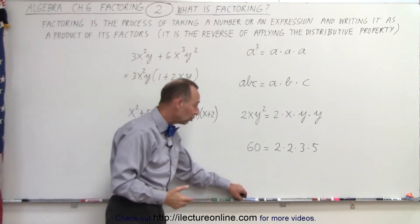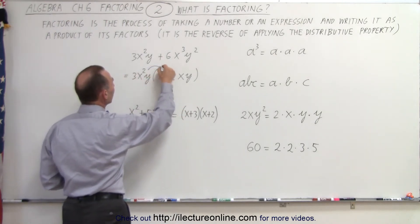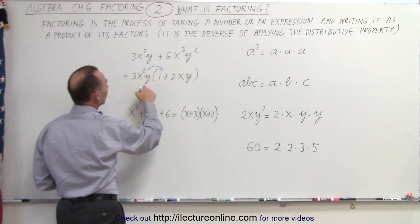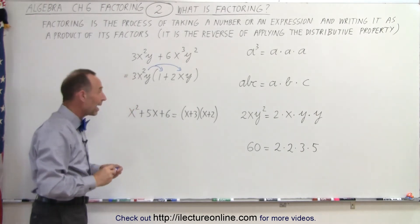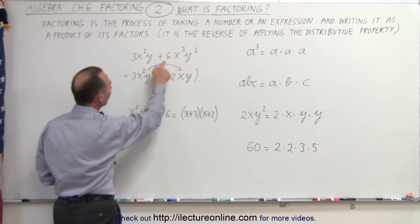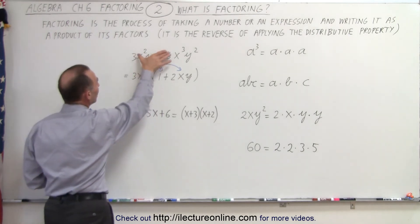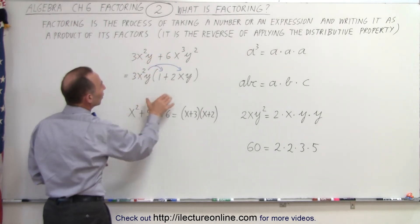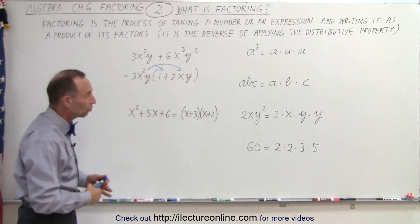If we now go ahead and apply the distributive property and multiply the 3x squared y times the 1, and then we multiply the 3x squared y times the 2x times y, then we get the original expression back. Notice that 3x squared y times 1 gives us 3x squared y, and 3x squared y times 2xy gives us 6 times x cubed times y squared. And so we get back what we originally started with. So the process of going from here to here is called factoring. The process going from here back to here is called using the distributive property or applying the distributive property.